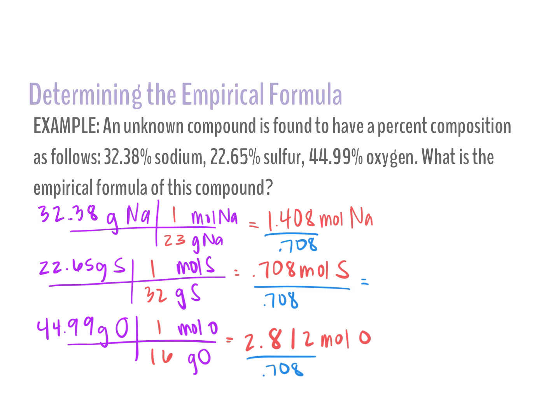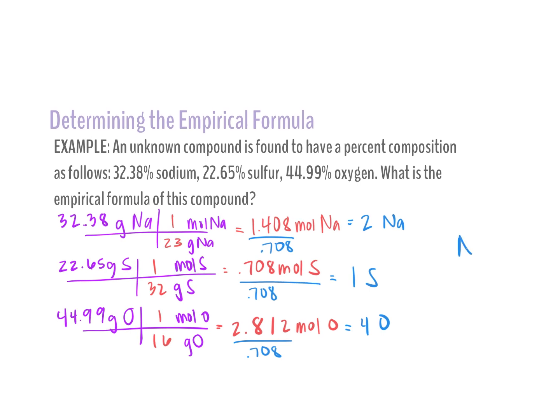Sulfur divided by itself gives one sulfur atom. For sodium: 1.408 divided by 0.708 gives 1.9887 — I'll round that to two. For oxygen: 2.812 divided by 0.708 gives 3.97 — I'll say that's four oxygens. Now I build my compound in the order they were given: Na2SO4. That means two sodiums, one sulfur, four oxygens.